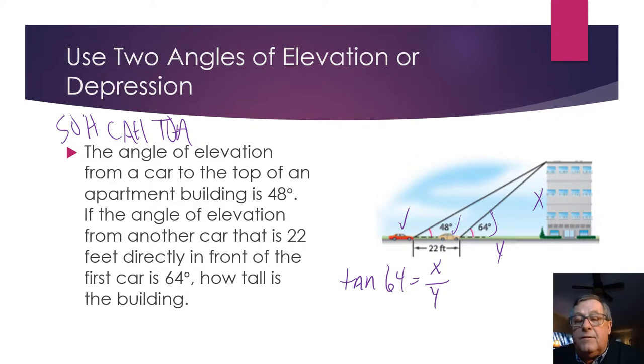So I could say then the tangent of 64 degrees is equal to X over Y. Now let's just solve this thing for X by multiplying both sides. So I've got two variables in here, so I'm going to have to use some substitution. So X is going to equal Y times the tangent of 64. Keep that in mind. X is going to equal Y times the tangent of 64.